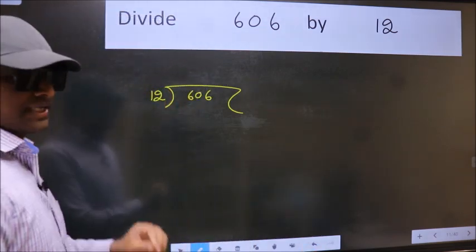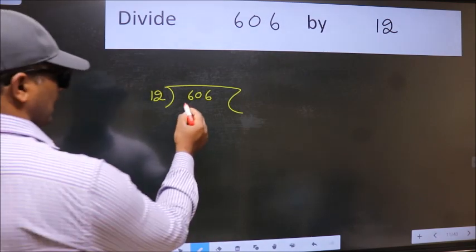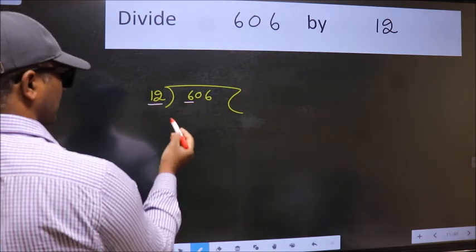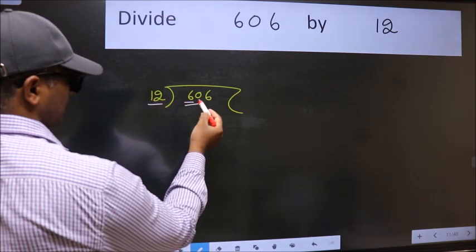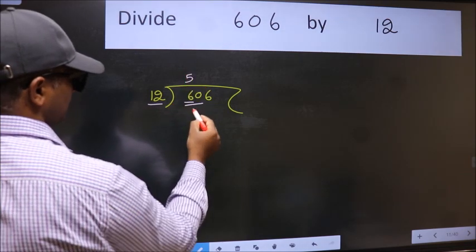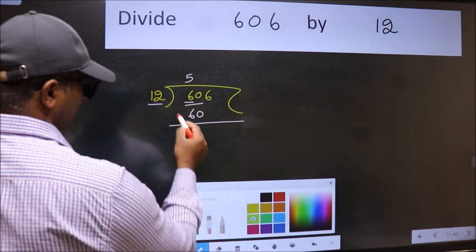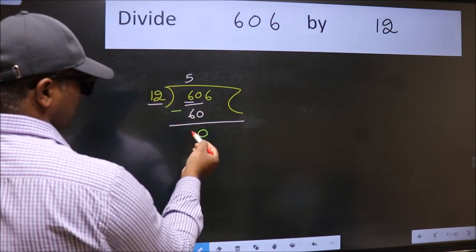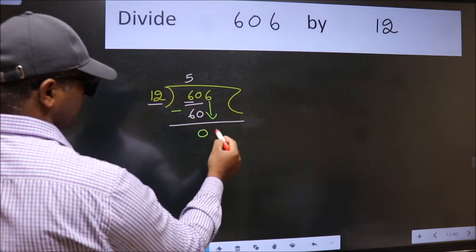This is your step 1. Next, here we have 6 and here 12. 6 is smaller than 12, so take two numbers, 60. When do we get 60 in 12 table? 12 times 5 is 60. Now we should subtract, we get 0. After this, bring down the beside number, so 6 down.